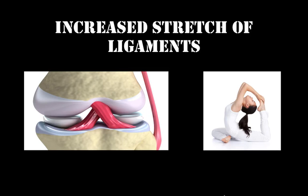A long-term adaptation is the increased stretch of ligaments. Ligaments, which can be seen here in this diagram, are bone to bone connections. Tendons, by contrast, are muscle to bone. It's important to distinguish between these two connective tissue structures.